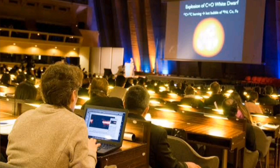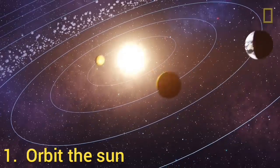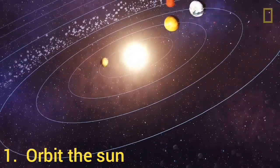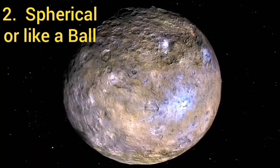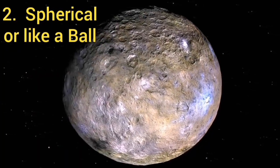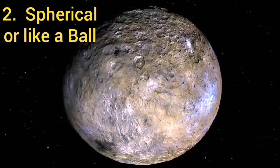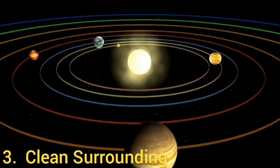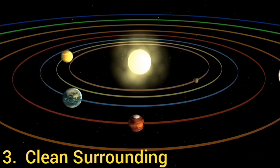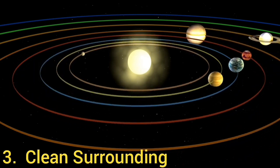But in the end, they concluded that they have to change the definition of the planet. So they say that a planet needs to have the following characteristics. Number one, it has to orbit the sun. Number two, it has to have gravity in order to pull itself into a sphere, or to be like a ball. And number three, its surrounding has to be clean. So it has to pull almost everything around it.